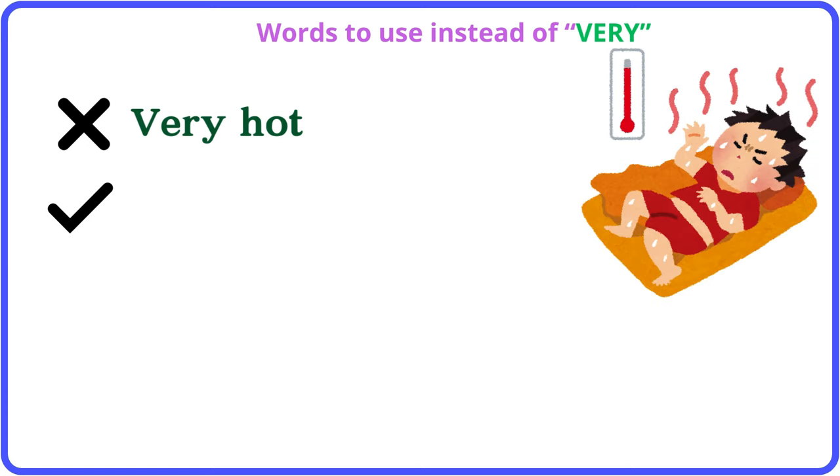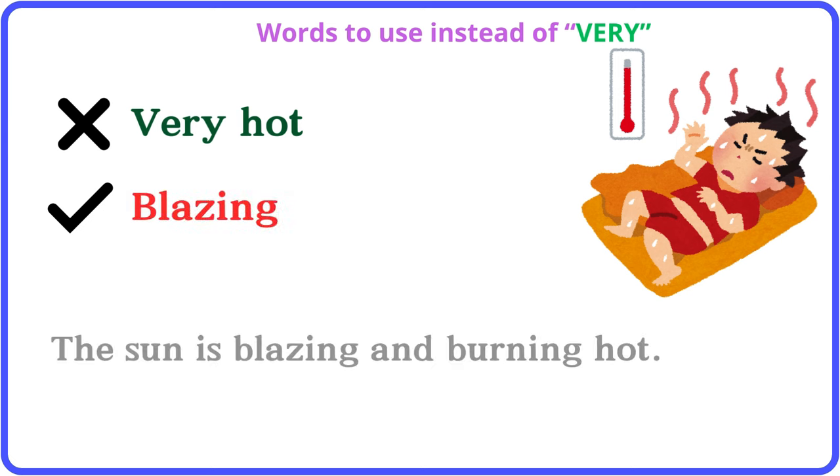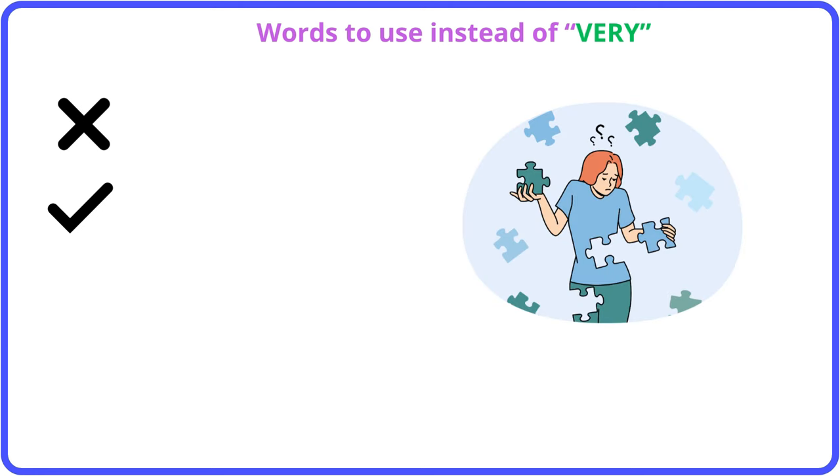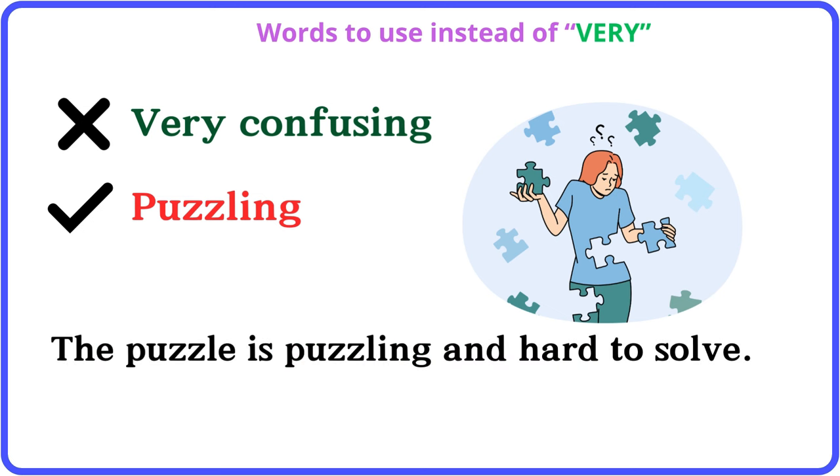Very hot: blazing. The sun is blazing and burning hot. Very confusing: puzzling. The puzzle is puzzling and hard to solve.